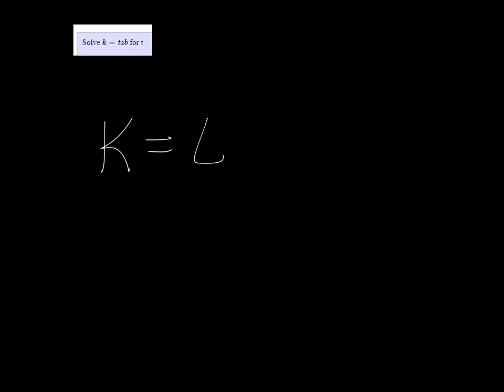All right, here we have the equation k is equal to t z b. We want to solve it for t, meaning get t all by itself. To do that, we note that t is multiplied by z and by b.